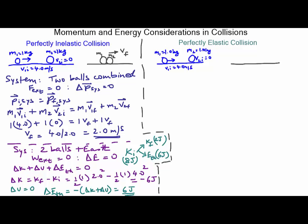Perfectly elastic collisions are defined as ones in which mechanical energy is conserved. All of the kinetic energy is converted to potential energy of the interaction, and all of that potential energy is converted right back to kinetic energy after the collision. This is approximated by billiard balls and by atoms and molecules in the air — nitrogen and oxygen molecules zipping by at over a thousand miles an hour, bouncing off each other with virtually no energy lost to heat. So in a perfectly elastic collision, delta K is zero.